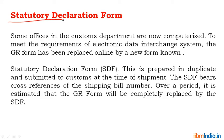The next form is the Statutory Declaration Form (SDF). Some — in fact, most — offices in the customs department are now computerized. To meet the requirements of the Electronic Data Interchange (EDI) system, the GR form has been replaced online by a new form known as the SDF. This form is prepared in duplicate and submitted to customs at the time of shipment. The SDF bears a cross-reference to the shipping bill number. It is estimated that the GR form will be completely replaced by the SDF — as of now, 99% of GR forms have been replaced by the SDF.